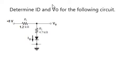Hello all, in this question it is asked to determine the ID which is the current flowing through the resistor R2 and diode and then the V0 voltage.